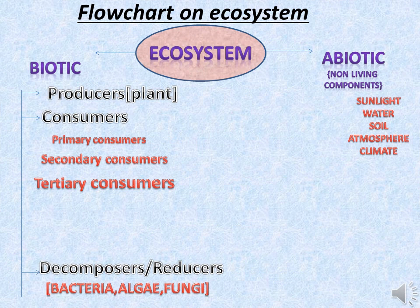Let us do a quick recap of whatever we learned in this video. We learned about the ecosystem — that it is made up of two components, that is the biotic and the abiotic. The biotic components consist of the producers, consumers, and decomposers, whereas the abiotic components are the non-living components of that area, which are very essential for the development of the biotic components.